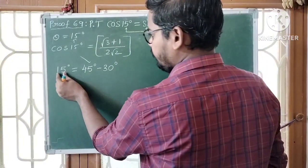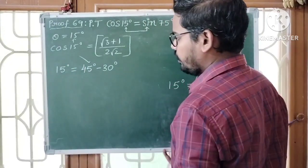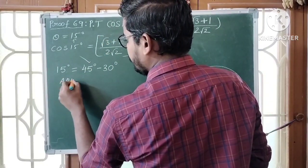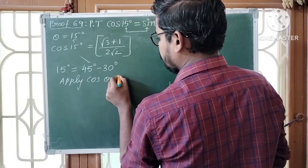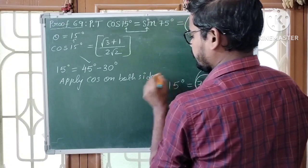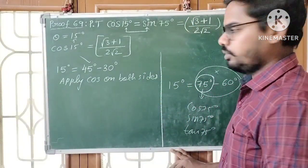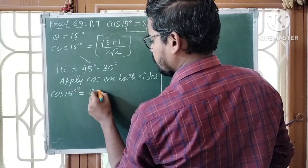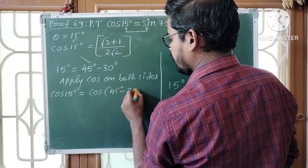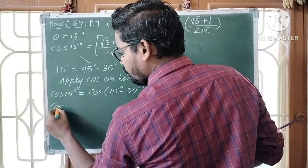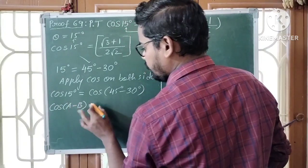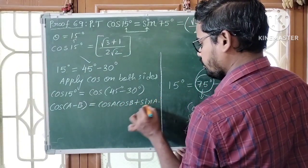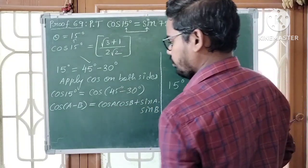So, let us consider 15 degrees equal to 45 degrees minus 30 degrees. We need the value of cos 15 degrees, so apply cos on both sides. Cos 15 degrees is equal to cos of 45 degrees minus 30 degrees. Now apply the compound angles formula: cos A minus B is equal to cos A cos B plus sin A sin B.